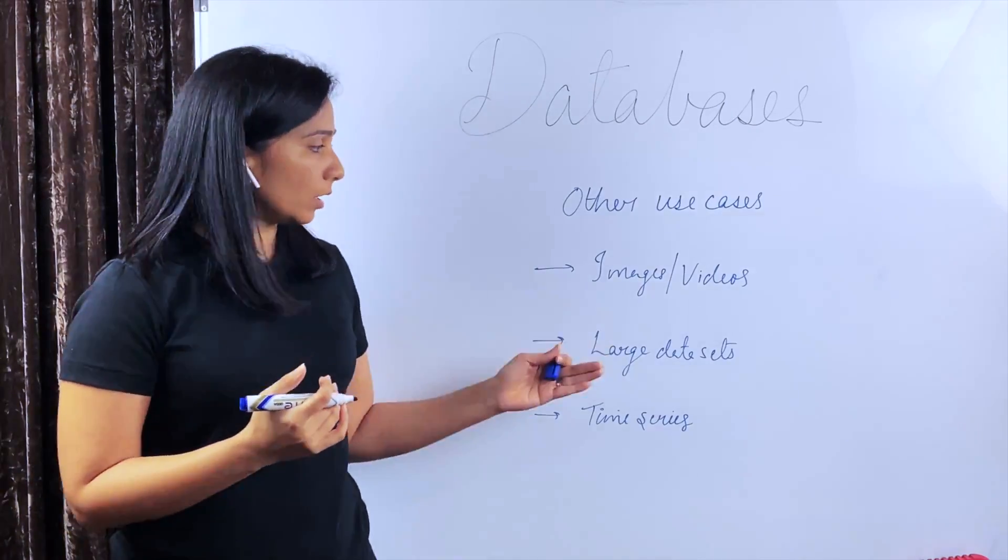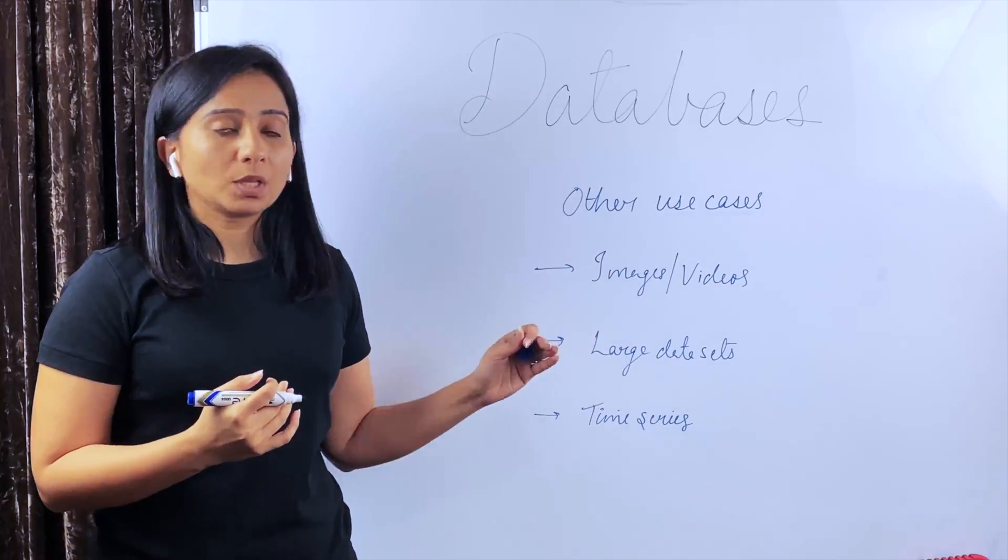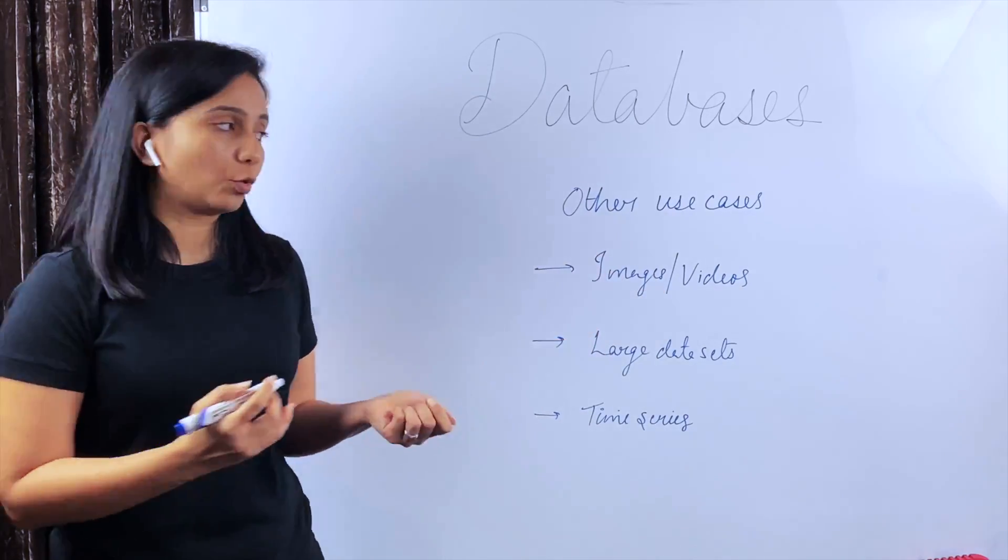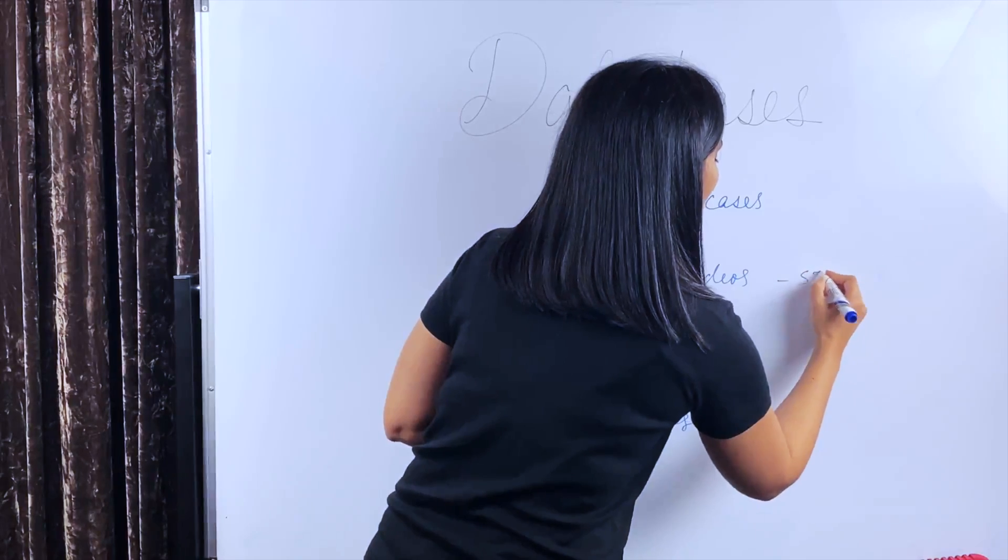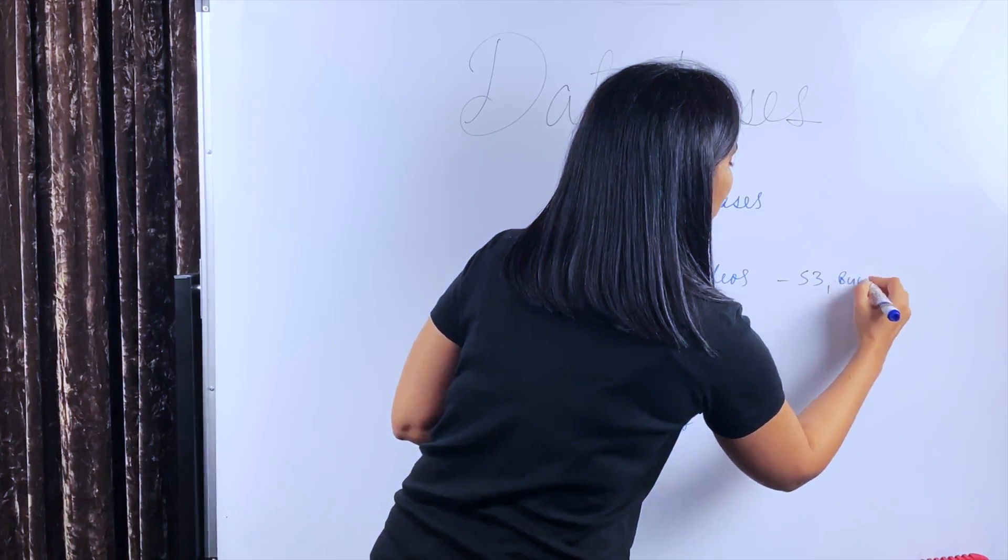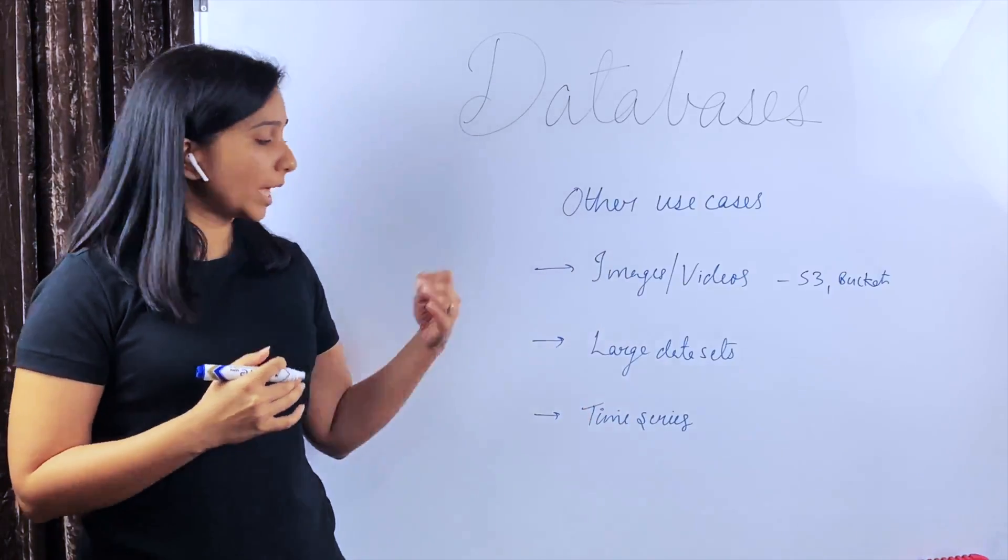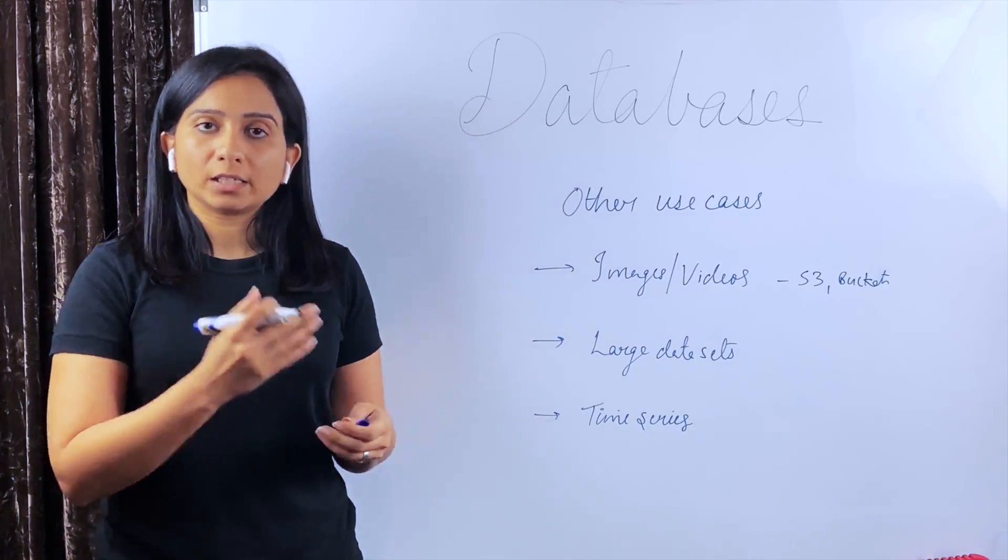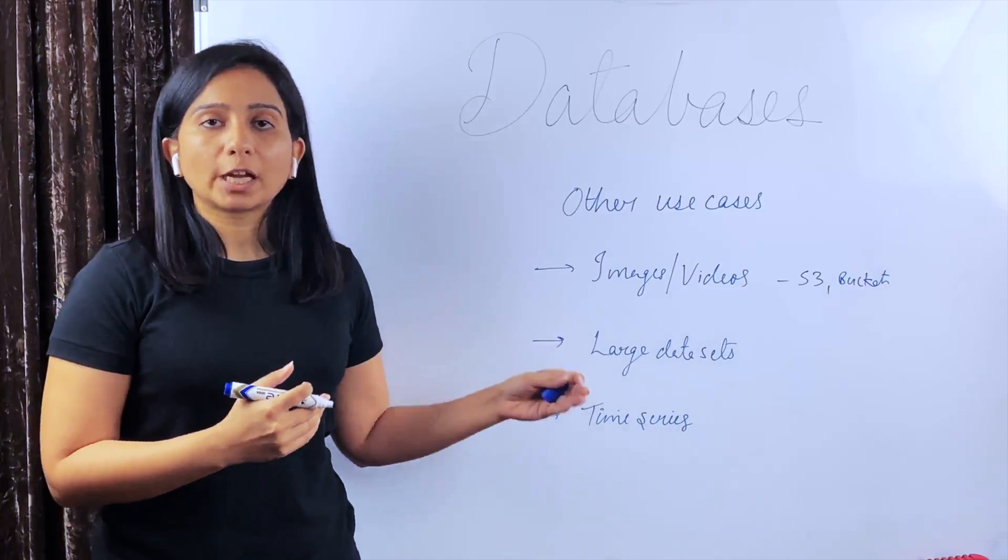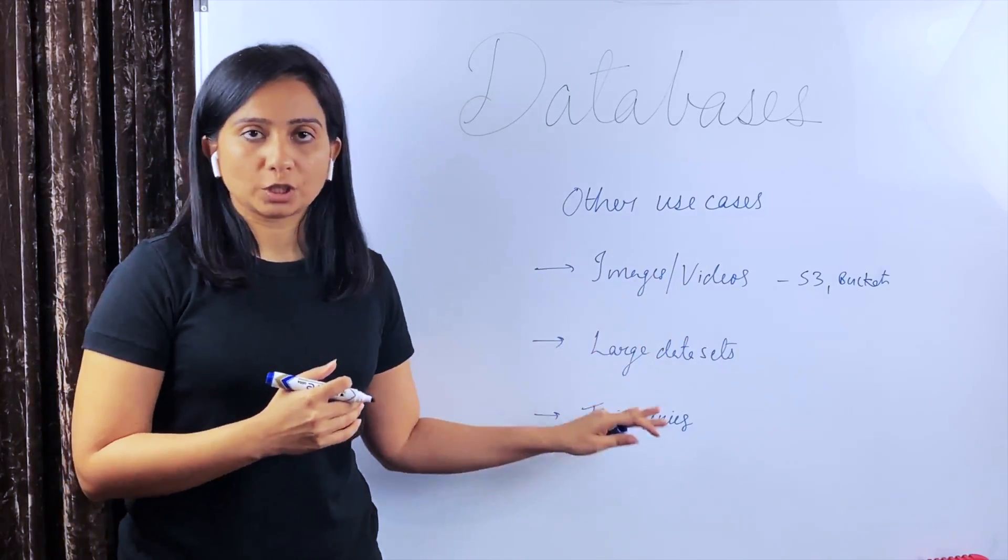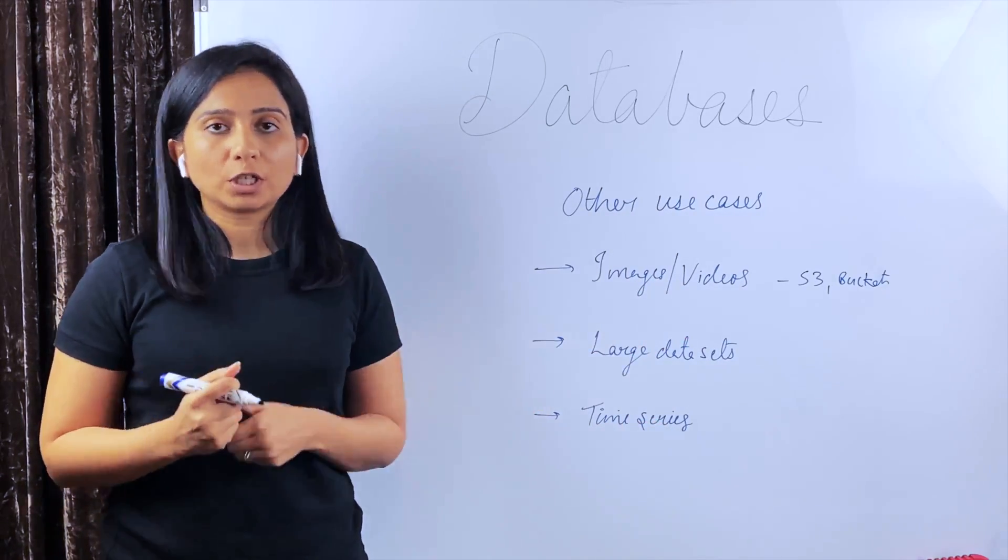Some other use cases for data are images and videos. Such kind of data is stored usually on cloud in Amazon S3 or buckets in case someone is using GCP. Then there are large data sets or time series data where a lot of data has to be stored and analytics is run over that. There are different kinds of databases which cater to such needs. All the details are included in the description.